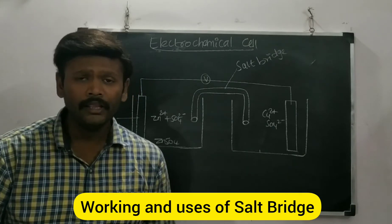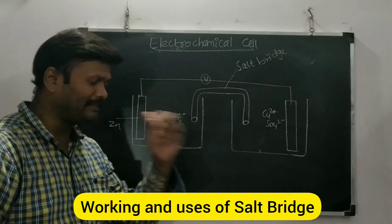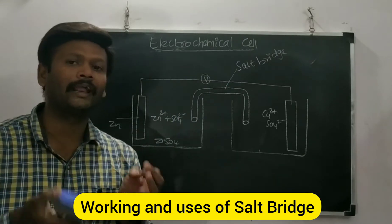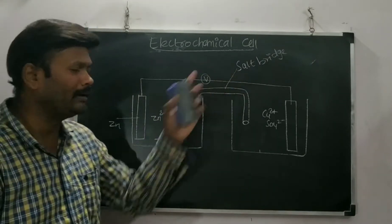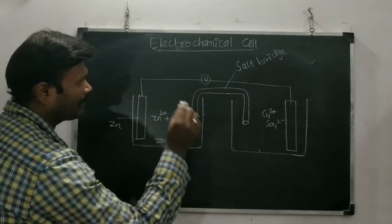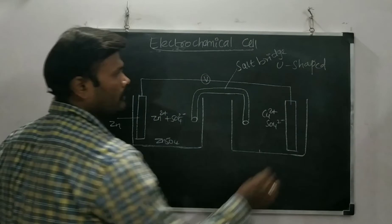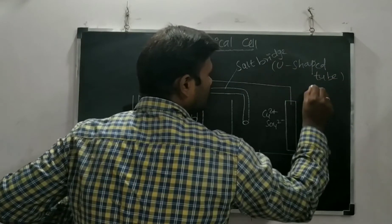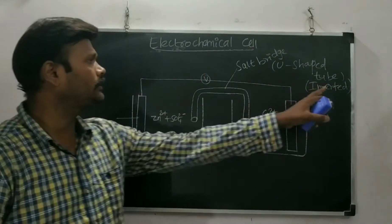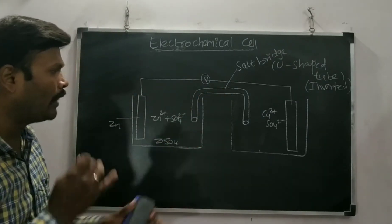Now we understand why we use the salt bridge to connect the two solutions. The salt bridge is a U-shaped tube used in an inverted manner, which consists of some chemicals. Let us discuss the importance of salt bridge in the electrochemical cell.